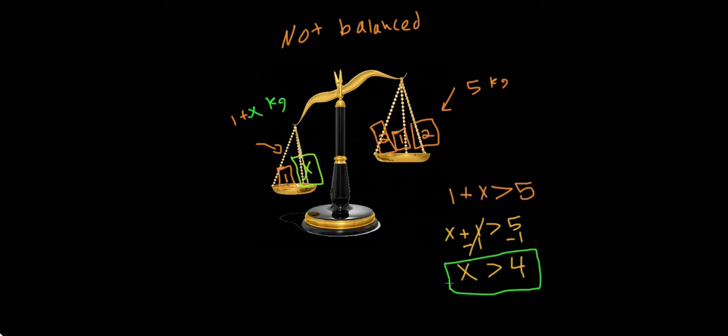So let's think about what this means. So if x is greater than 4, then this scale will be not balanced. And that's what we're looking for. We're looking for the left side to hang more towards the ground. And that will only hold true if x is greater than 4.